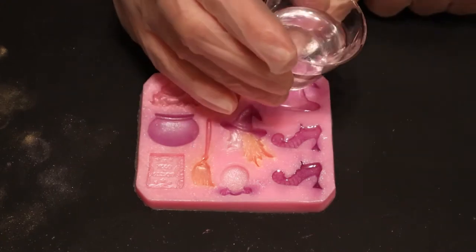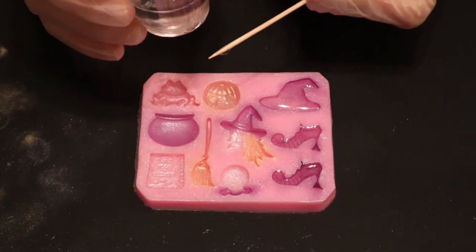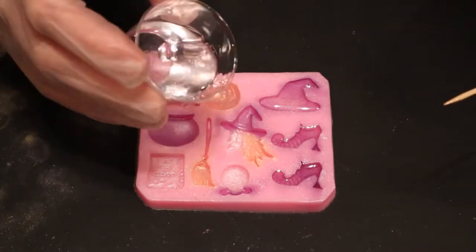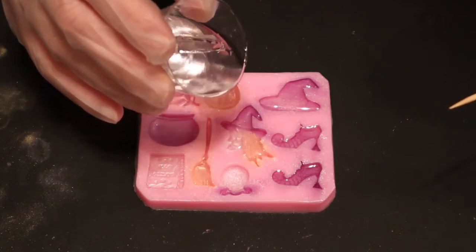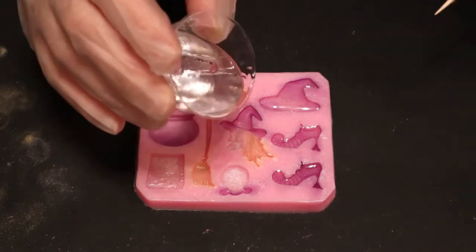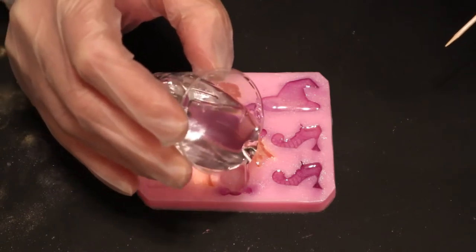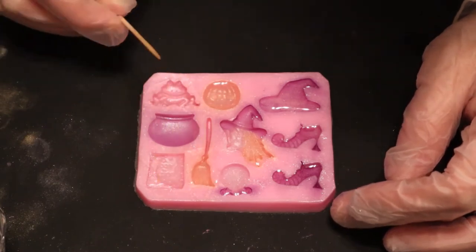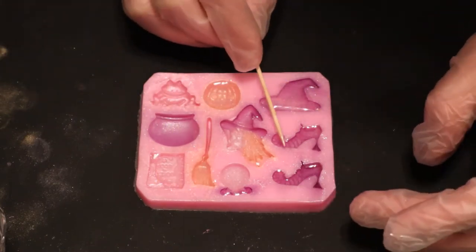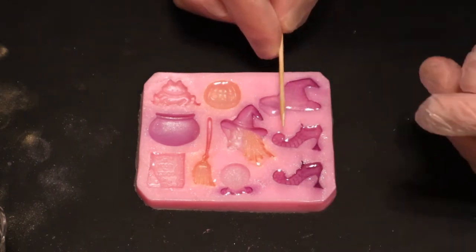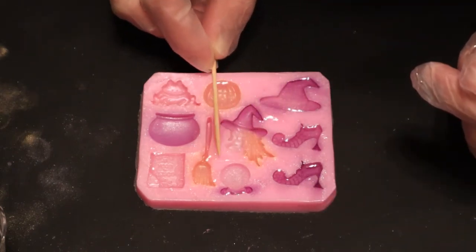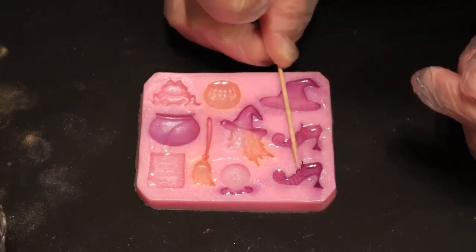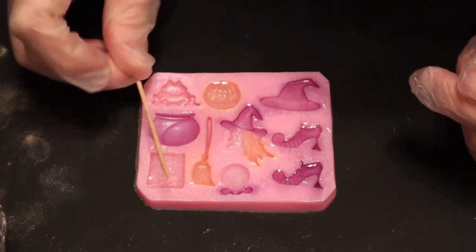I learned very quickly that trying to pour into these little tiny areas is very hard. I wish I'd had a syringe—that would have been easier and I could have directed it. Instead I just overpoured slightly and I'm using this toothpick to smooth it out and put that resin into the last several little molds here.